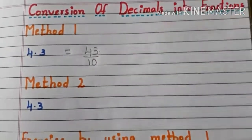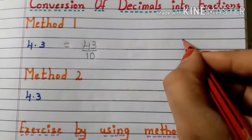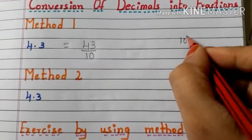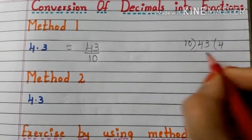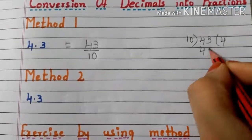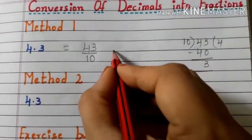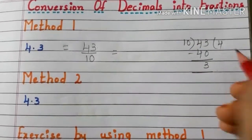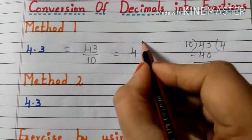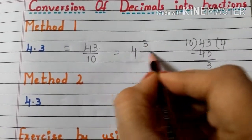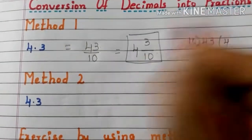Let us convert this fraction into a mixed fraction. So divide 43 by 10. 10 fours are 40, and the remainder is 3. Now write the mixed fraction: 4 and 3 by 10.